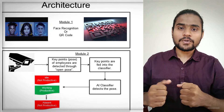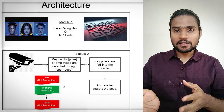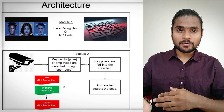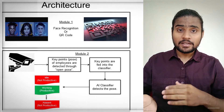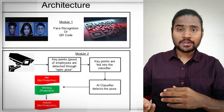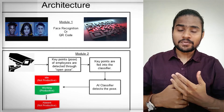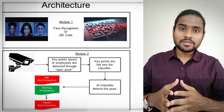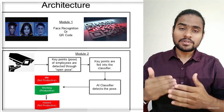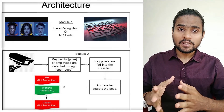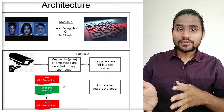In our AI-enabled workforce monitoring system, we have one core module and two sub-modules. The core module is called OpenPose, working on the OpenPose architecture. The other two modules are: the first one is face recognition, and the second one is QR code.